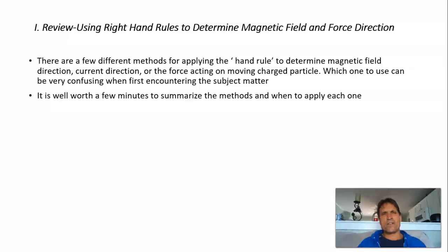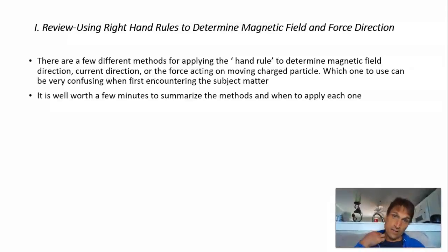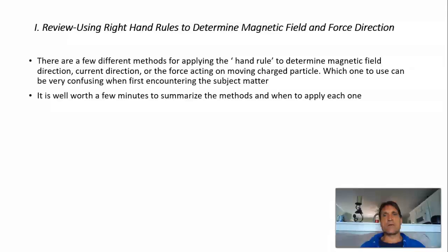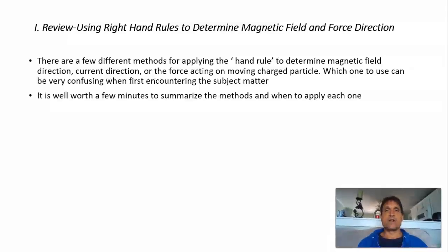We've been discussing the directions of magnetic forces and to determine them we've been using right-hand rules. You've probably seen enough of them to be confused right now — there are a couple different ones you can use, and the author sometimes tends to give you more than you need. So which one to use can be very confusing. I'd rather take a couple minutes here to review a couple of these, when to use them, and then we'll apply them.